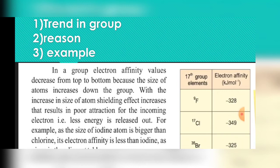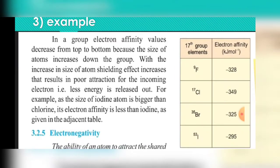Next, we discuss the trend in a group. In a group, electron affinity values decrease from top to bottom. The reason is that as we go down — fluorine has atomic number 9, chlorine 17, bromine 35, and iodine 53 — atomic number increases, electrons increase, and the number of shells also increases. Therefore, the hold of the nucleus on the outer shell decreases, and the attraction of the nucleus for the incoming electron is less, so less energy is released.